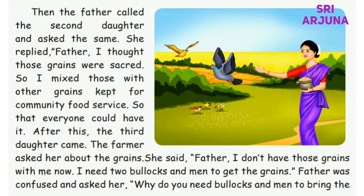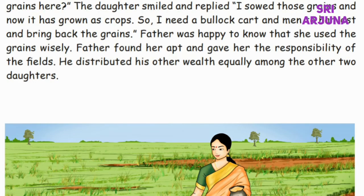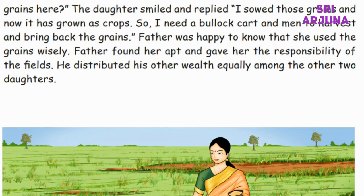After this, the third daughter came. The father asked her about the grains. She said, 'Father, I don't have those grains with me now. I need two bullocks and men to get the grains.' Father was confused and asked her, 'Why do you need bullocks and men to bring the grains here?' The daughter smiled and replied, 'I sowed those grains and now they have grown as crops. So I need bullocks and men to harvest and bring back the grains.' Father was happy to know that she used the grains wisely. He found her apt and gave her responsibility of the fields. He distributed his other wealth equally among the other two daughters.